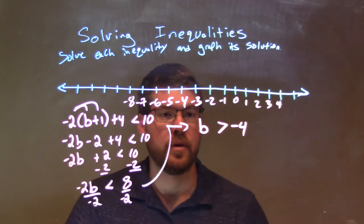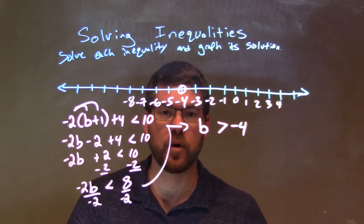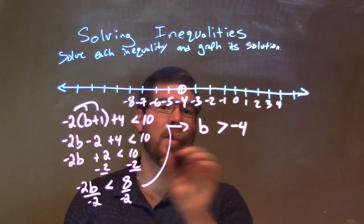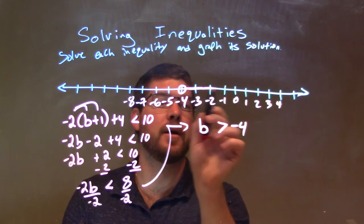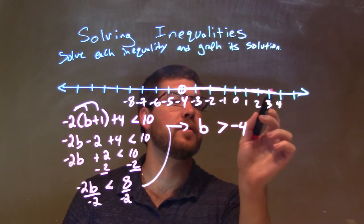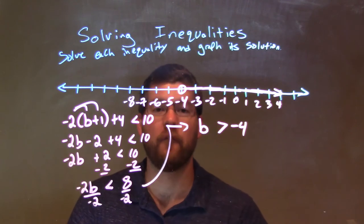Now, when I graph this, if b is greater than negative 4, I'm going to put an open circle right here at negative 4. Then from there, I'm going to graph to the right what's greater than negative 4. So, I graph to the right, like this, and there we have it. b is greater than negative 4.